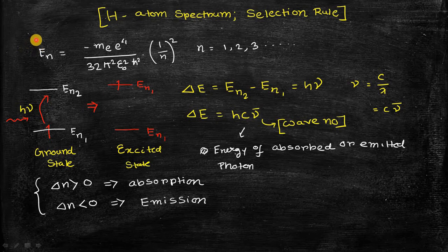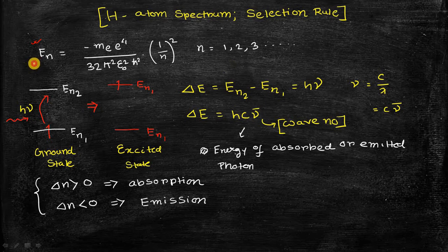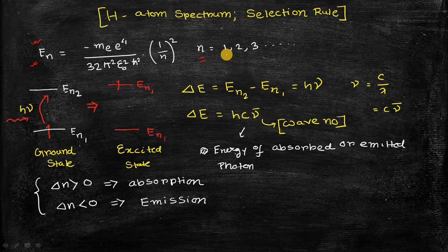This is the equation by which we can express the energy level of any hydrogen atom quantum mechanical model system. As you can see, En defines the energy of the nth state for hydrogen atom. This n is basically called the principal quantum number, which can have any integer number between 1 to infinity.